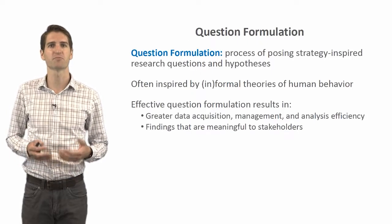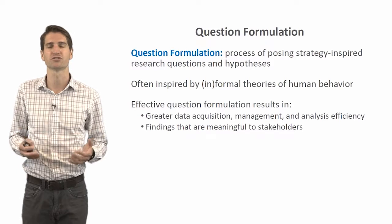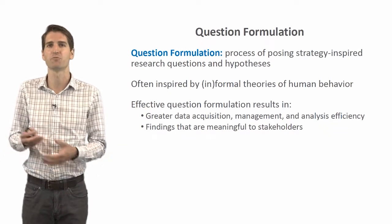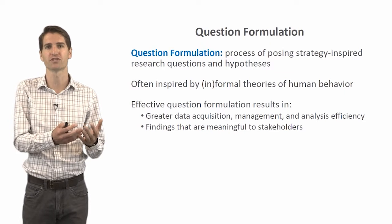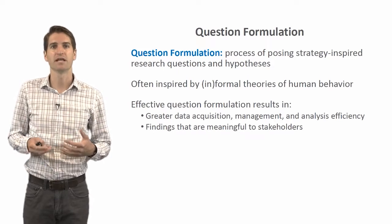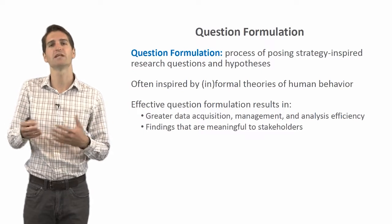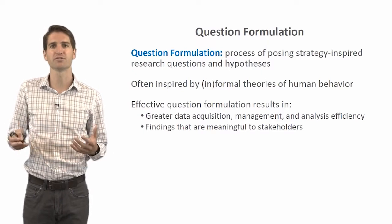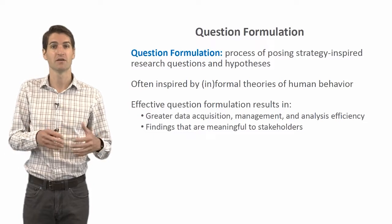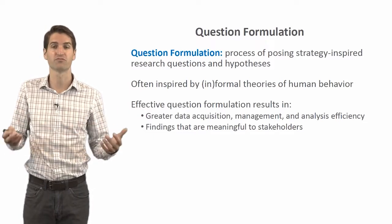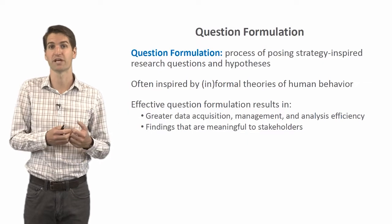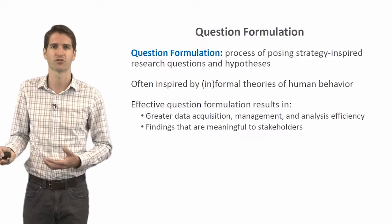We're talking about question formulation — a process of posing strategy-inspired research questions and/or hypotheses. The questions that we formulate are often inspired by formal or informal theories of human behavior. These might be from academic journals, or from our own informal theories we develop within the company. A theory is a set of propositions pertaining to a particular phenomenon, providing a way for understanding and explaining that phenomenon of interest. For instance, the unfolding model of turnover might be an important theory when trying to anticipate what factors contribute to voluntary turnover within an organization.